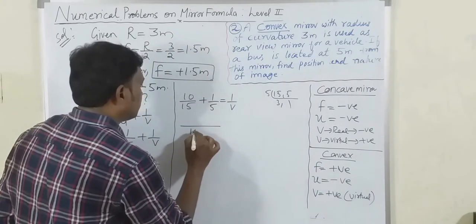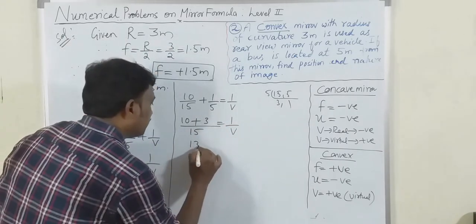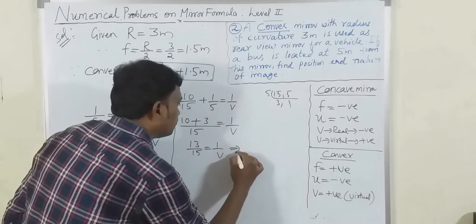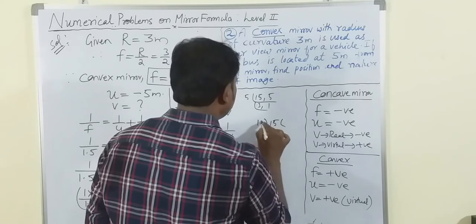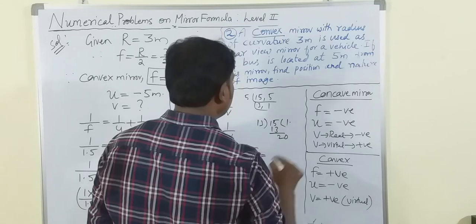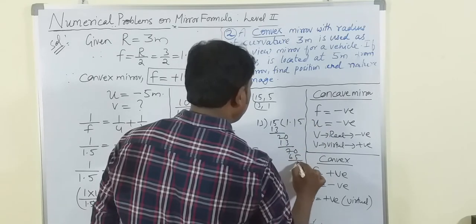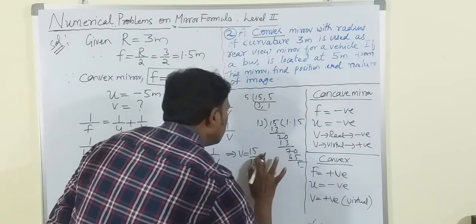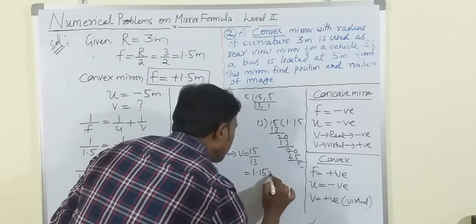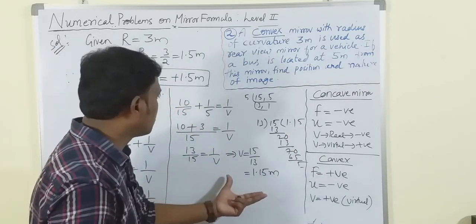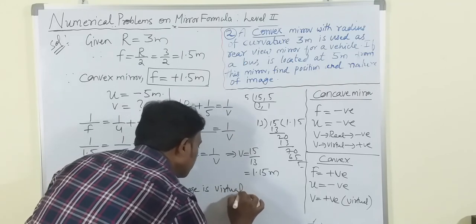Therefore v = 15/13, which is approximately 1.15 meters. The value of v is positive, so the image is virtual.